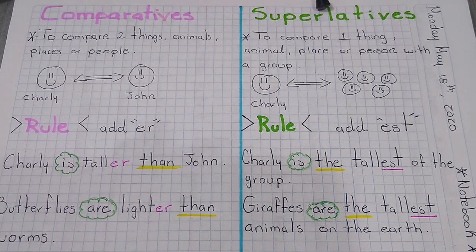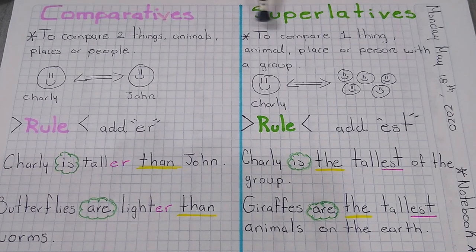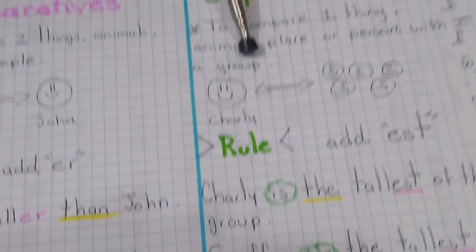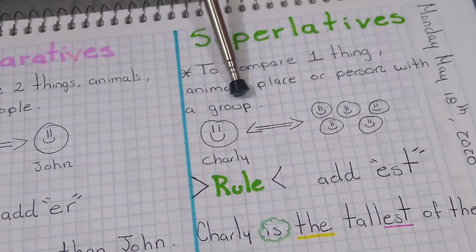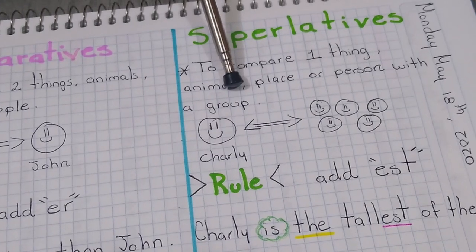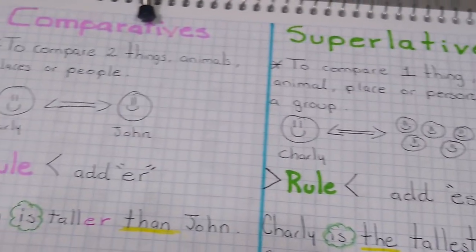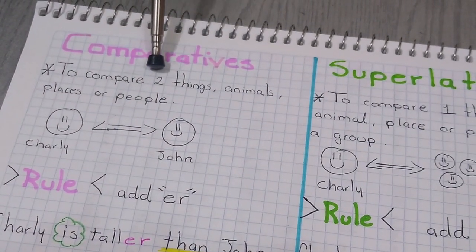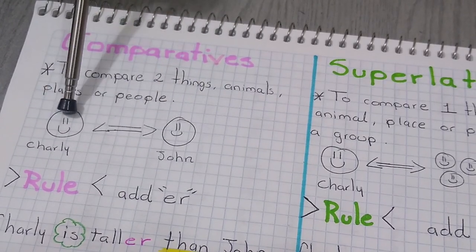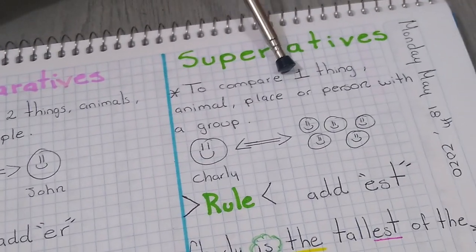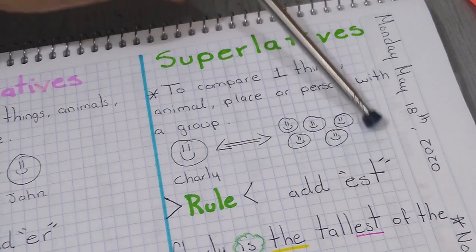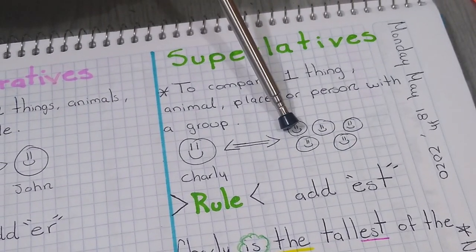Now let's go with the superlatives. We use the superlatives to compare one thing, animal, place or person with a group. Here we have the difference between superlatives and comparatives. When we use comparatives, we are going to compare two, only two people, for example. And when we use superlatives, we are going to compare one person with a group. Do you remember the difference?